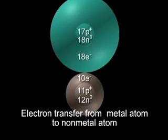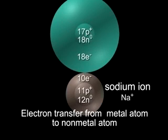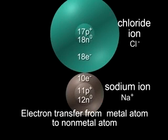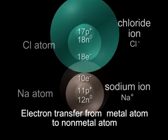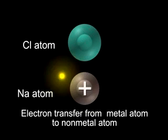The loss of the electron converts the sodium atom into a smaller, positively charged sodium ion, Na+, while the gain of the electron converts the chlorine atom into a larger, negatively charged chloride ion, Cl-. Let's view this essential step once more.